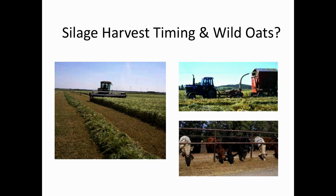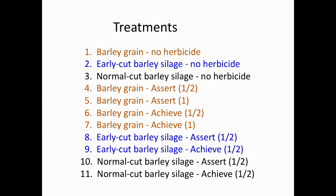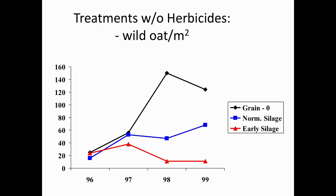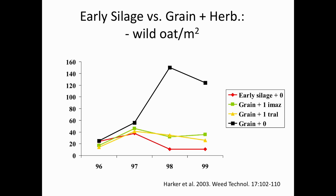Silaging is very good for weed management. We did work on that and showed fairly dramatic results. There were three main treatments: barley grain, early-cut barley silage (about a week earlier than normal), and normal-cut silage, each in combination with some herbicides. Without herbicides, grain production shows wild oats generally increasing. Normal-cut silage also slowly increases, but cutting just a week early can keep wild oat management at a pretty good level. In fact, early-cut silage with no herbicides did as well or better than grain production with full rates of Achieve and Assert. So cutting silage just a week early is very effective.